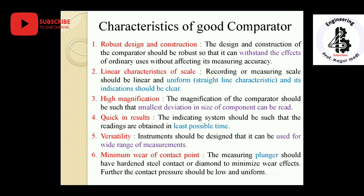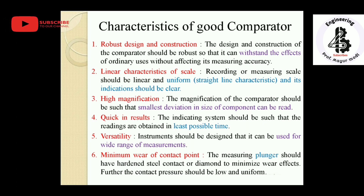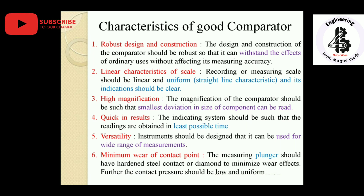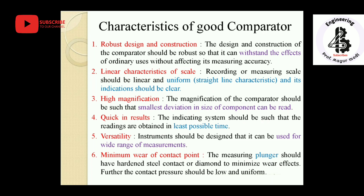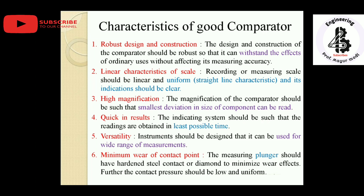Fourth, quick results — the indication system should be such that readings are obtained in the least possible time; the instrument must be sensitive during measurements. Fifth, versatility — the instrument should be designed for a wide range of measurements, from minimum to higher ranges, increasing flexibility. Sixth, minimum wear of contact points — the contact point must be made from hardened steel.